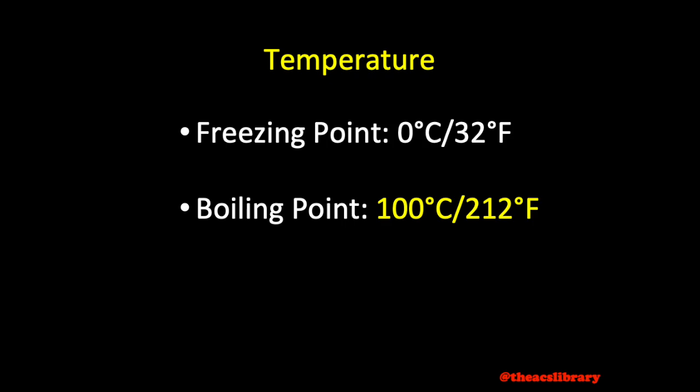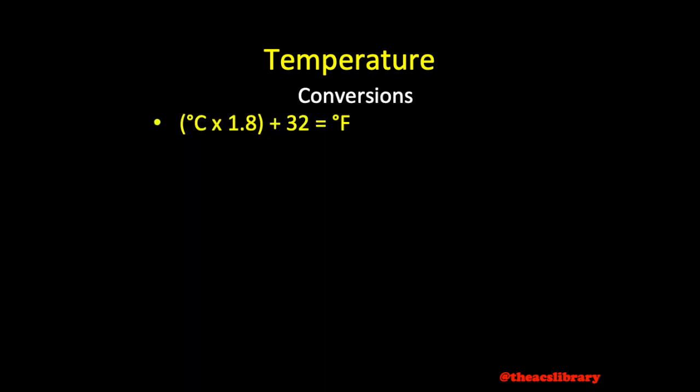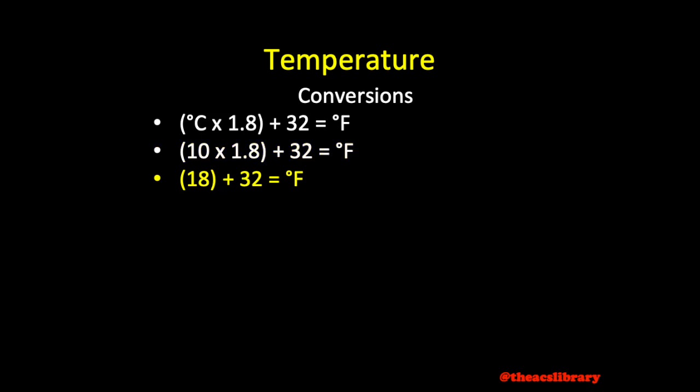The formula to convert from Celsius to Fahrenheit is simple. Take a Celsius temperature, multiply it by 1.8, and add 32 to the product. For instance, 10 degrees Celsius multiplied by 1.8 is 18, plus 32 gives us 50. So 10 degrees Celsius is equal to 50 degrees Fahrenheit.